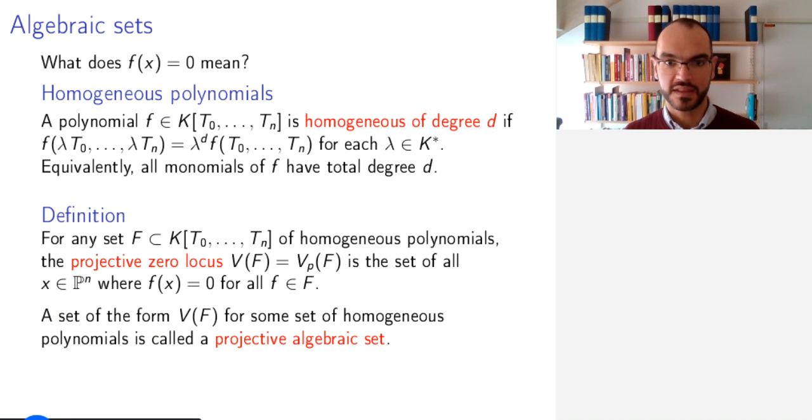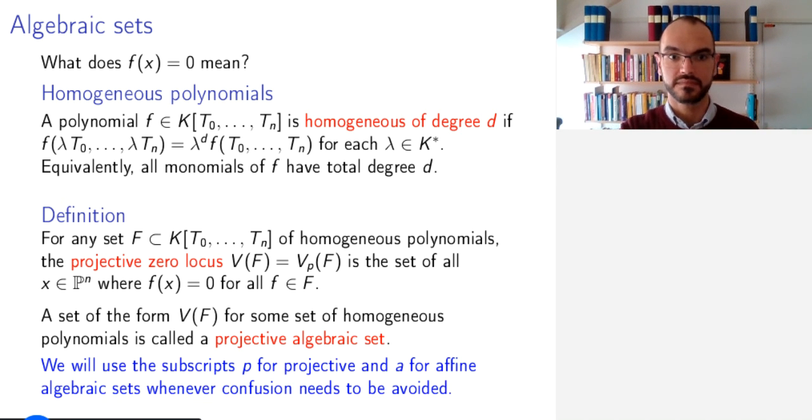We can define a projective algebraic set in the analogous way to affine algebraic set, namely the zero locus of some family of, with now the restriction we have, homogeneous polynomials. Throughout, we will use the subscripts p as in projective whenever we are looking at projective zero loci to distinguish it from the case when we look at affine zero loci where we will use the subscript a for affine. And only when there is no risk of confusion, we will write V(F) without any subscript.